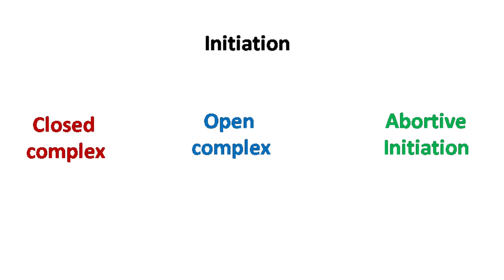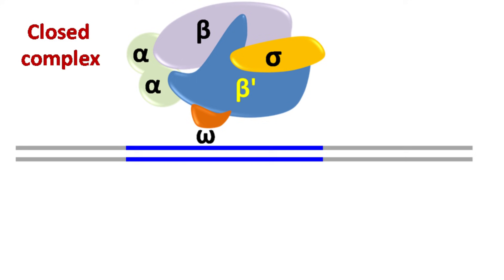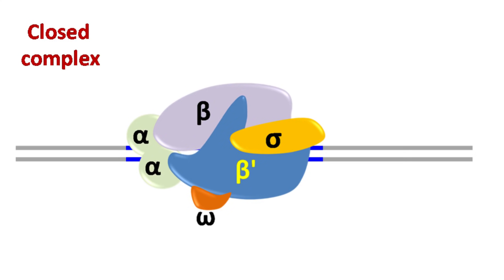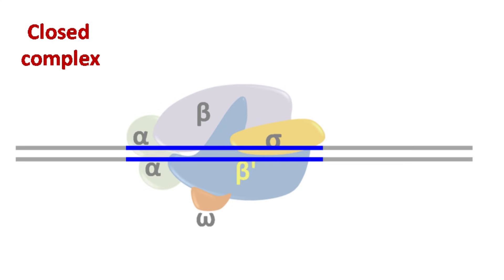The initiation of transcription is divided into three steps: the formation of the closed complex, open complex, and the phenomenon of abortive initiation. In the first step, RNA polymerase binds to the promoter region. The DNA at this stage is still in the double-stranded form, and this complex is known as the closed complex. The closed complex represents RNA polymerase that is just bound with a promoter.